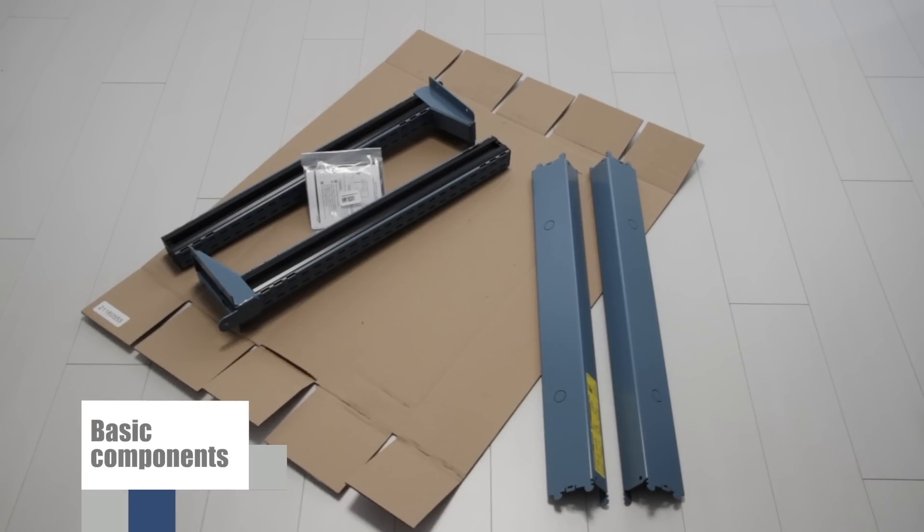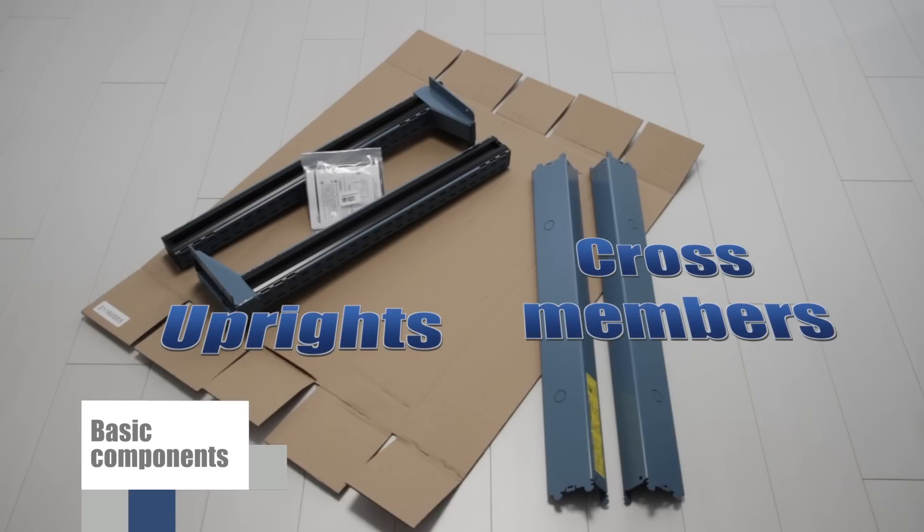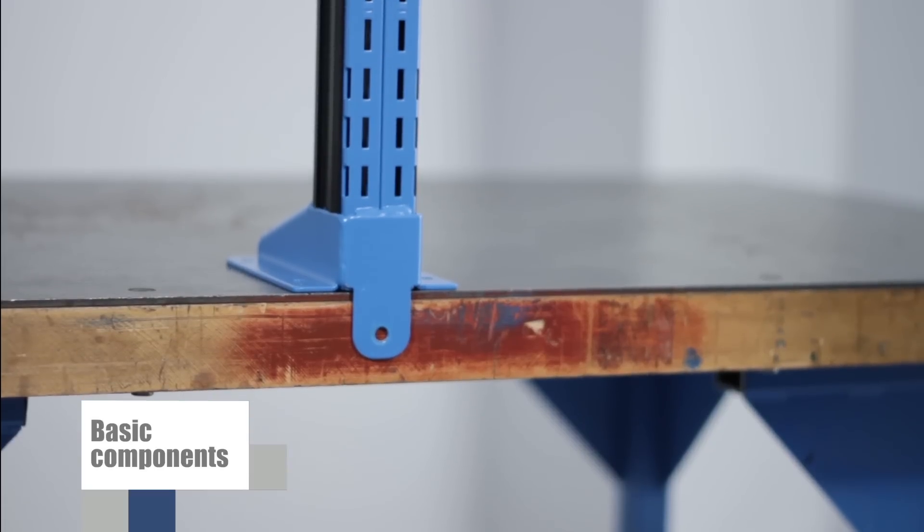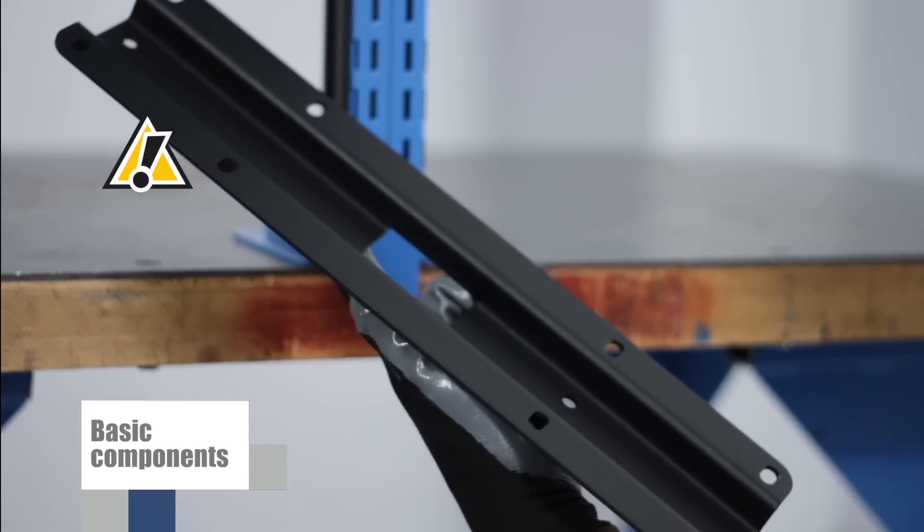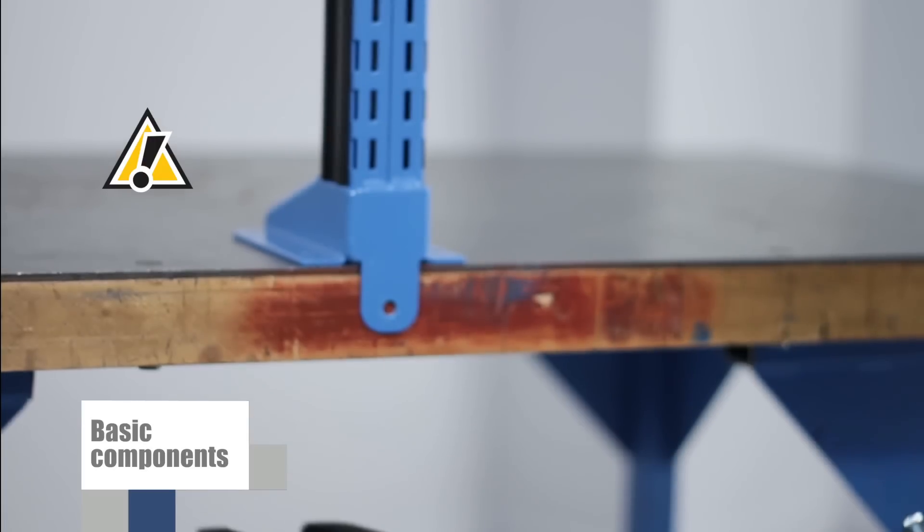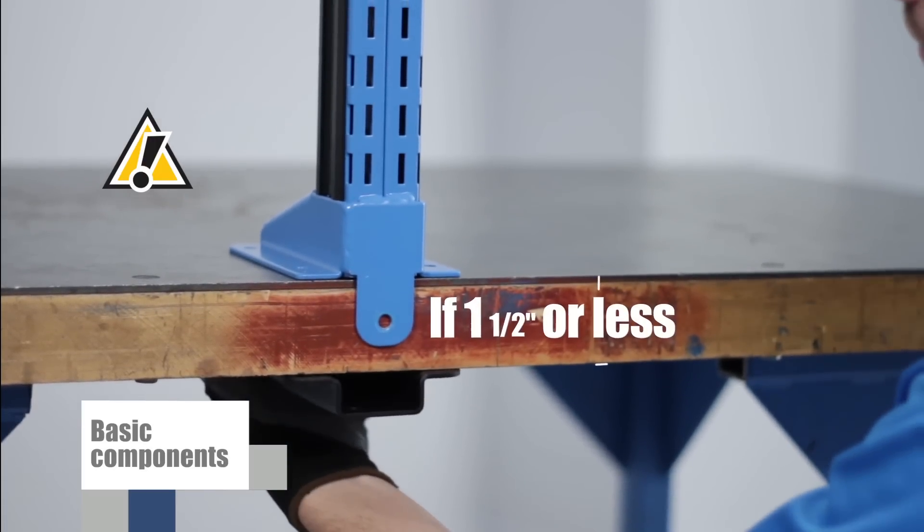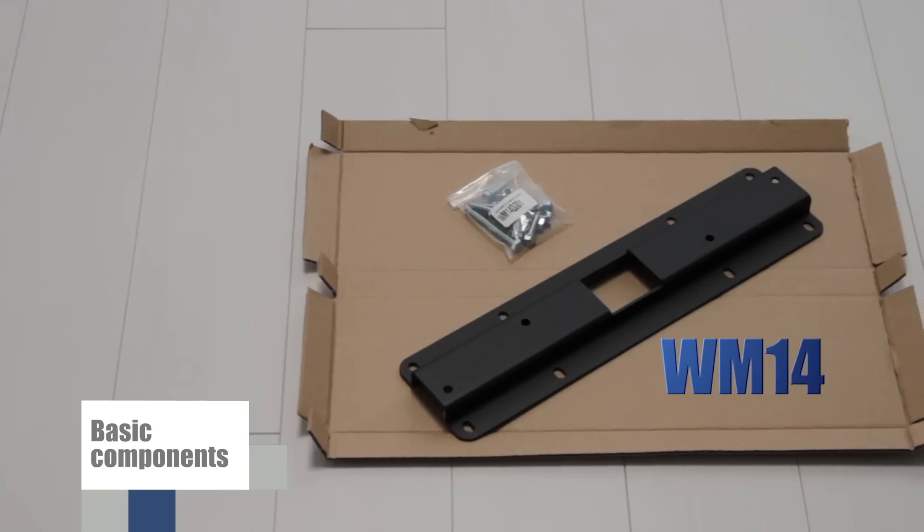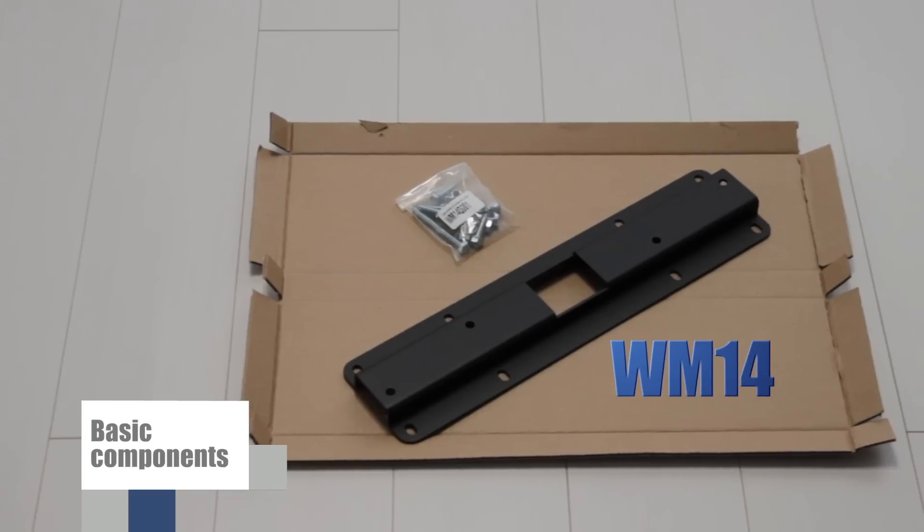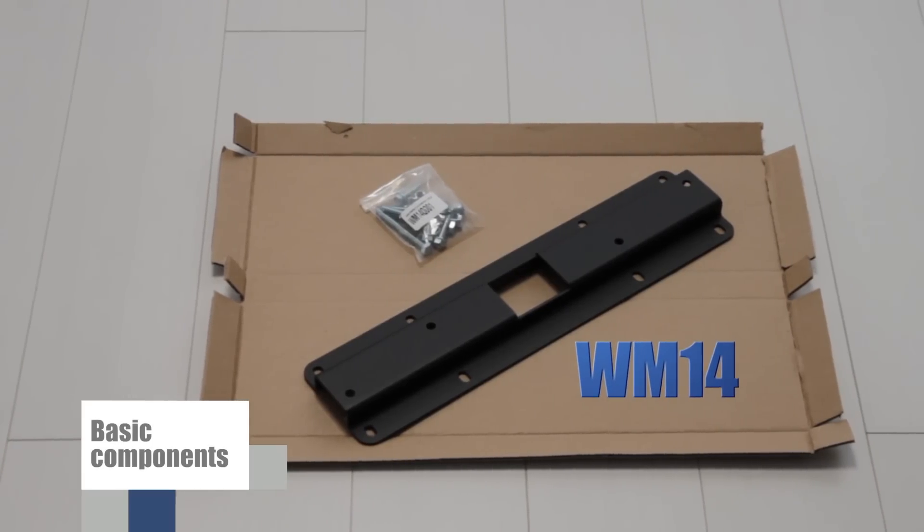Here are the two structural components that must be assembled in order to install your WM multi-purpose frame: the uprights and the cross members. If you are installing your WM frame on a work surface that is less than one and a half inches thick or in poor condition, you should use this reinforcer. This is recommended for all frames that are being installed on workstations that were not sold by Rousseau.